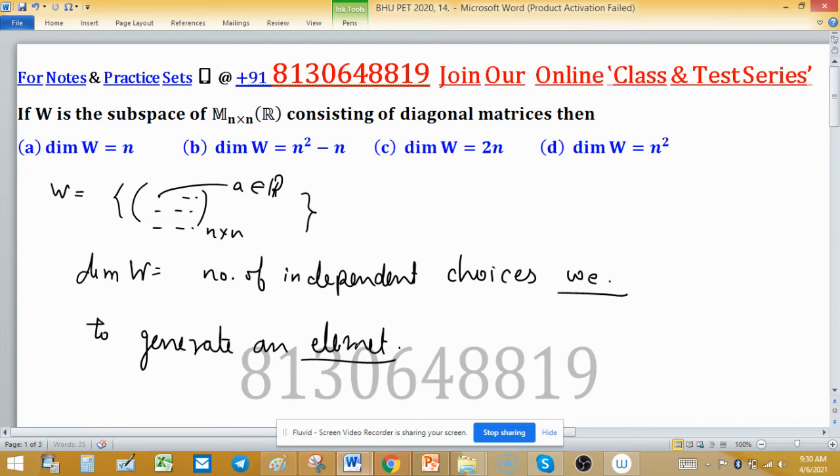I am not saying for a particular element of W, but any element. For all elements, how many independent choices do we have to generate an element of W? W contains only diagonal elements - diagonal matrices, not just scalar matrices. Remember one point: scalar matrices are also included in diagonal matrices.